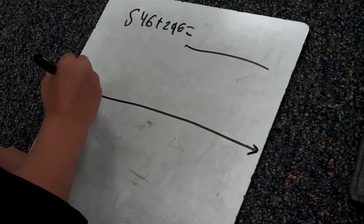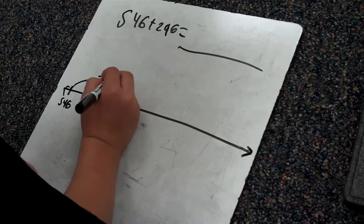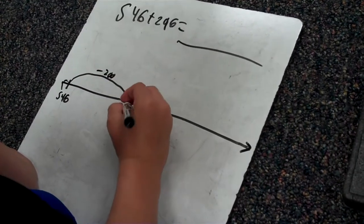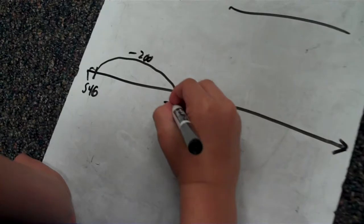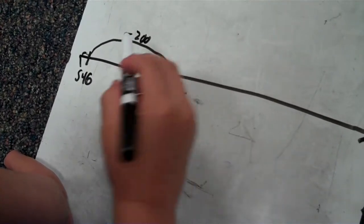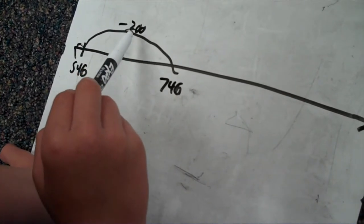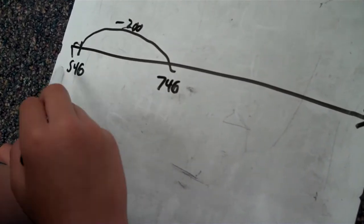Then we plus like 200 which equals 746. And the thing that, it's why I do 200 because I'm, because if we do 100,